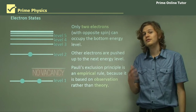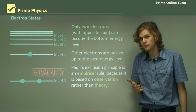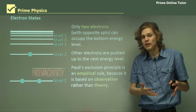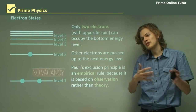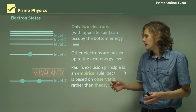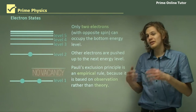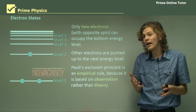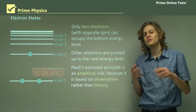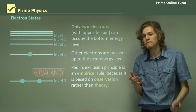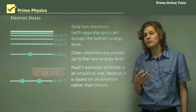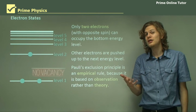Pauli's exclusion principle is an empirical rule — it was used to describe reality and not to explain it. Pauli didn't know why this rule worked; he just knew that it did. It would be a little while before someone could come up with an explanation for it.